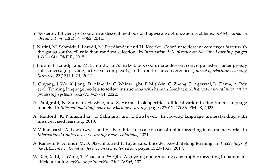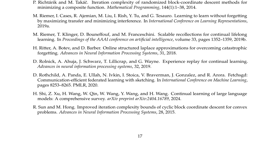The paper provides a comprehensive overview of coordinate descent methods, lifelong learning, and large language models. The authors discuss the efficiency of coordinate descent on large-scale optimization problems and the importance of choosing the right update rule for faster convergence. They delve into lifelong learning, which enables machines to learn continuously without forgetting previous knowledge, and discuss task-specific skill localization in fine-tuned language models, the impact of scale on catastrophic forgetting, and approaches such as experience replay and orthogonal subspace learning.